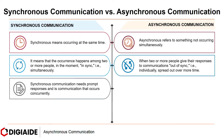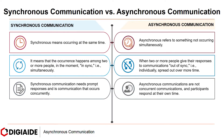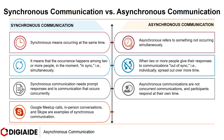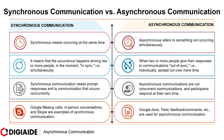Synchronous communication needs prompt responses and is communication that occurs concurrently, whereas asynchronous communications are not concurrent and the participant responds at their own time. Finally, Google Meet calls, in-person conversations, and Skype are examples of synchronous communication, which take place live. On the other hand, Google Docs, comments, and feedback are used for asynchronous communication.